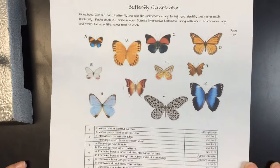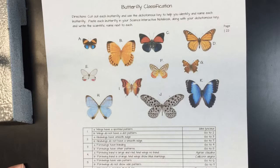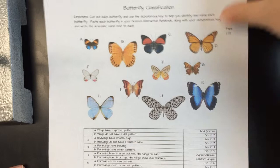Hey everybody, this is Mr. Gov, and I want to walk you through how to use a dichotomous key with the butterfly classification. So on here we've got all these beautiful butterflies, and we even went the extra mile and printed it for you in color. Your job is to find the names of all these little guys.